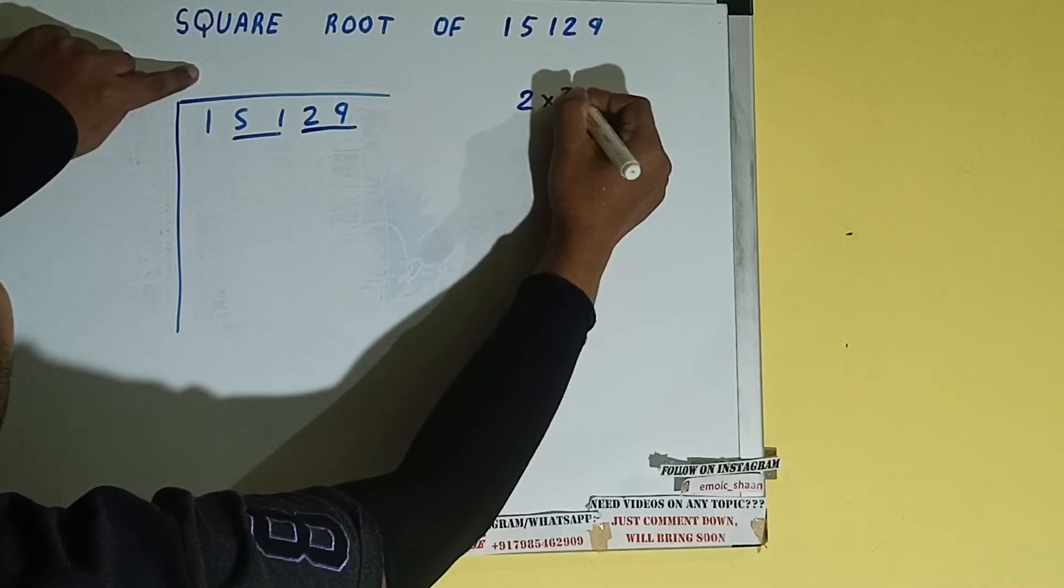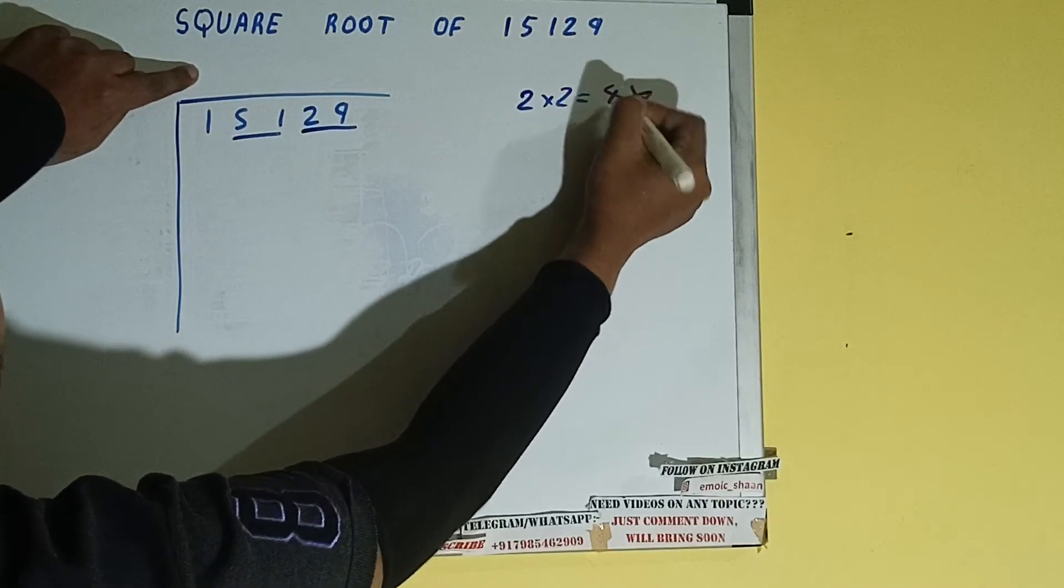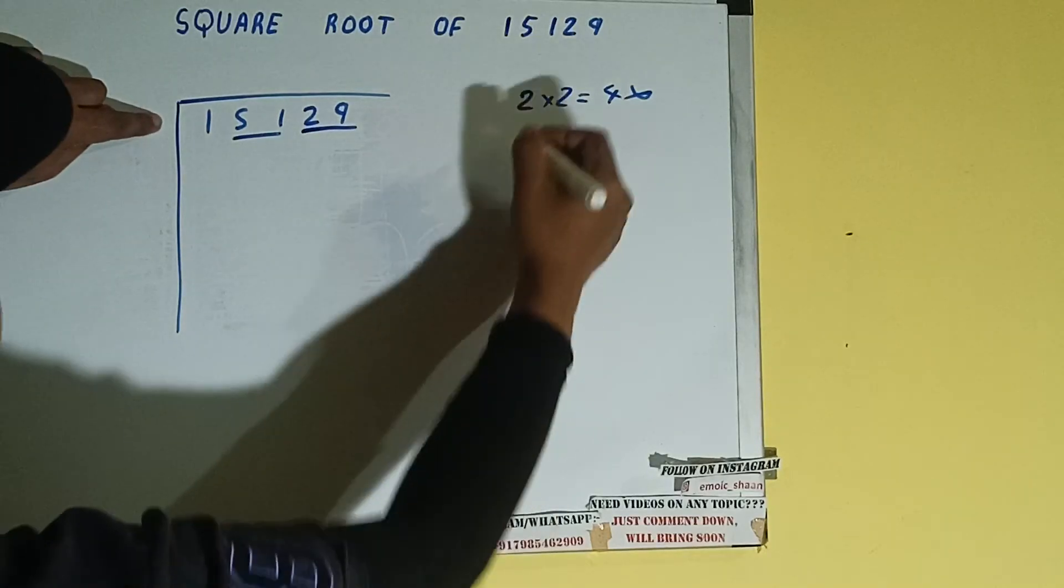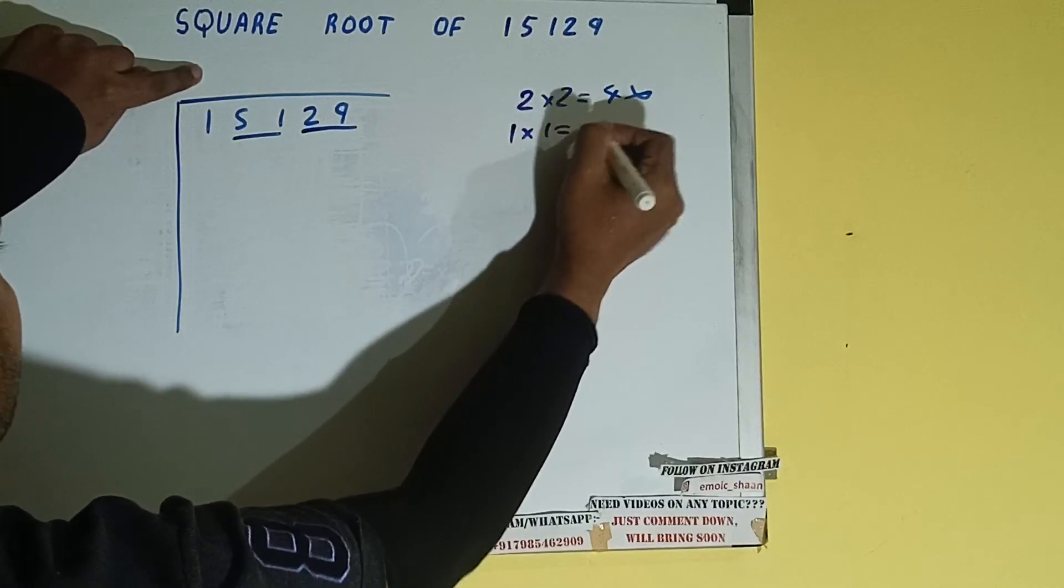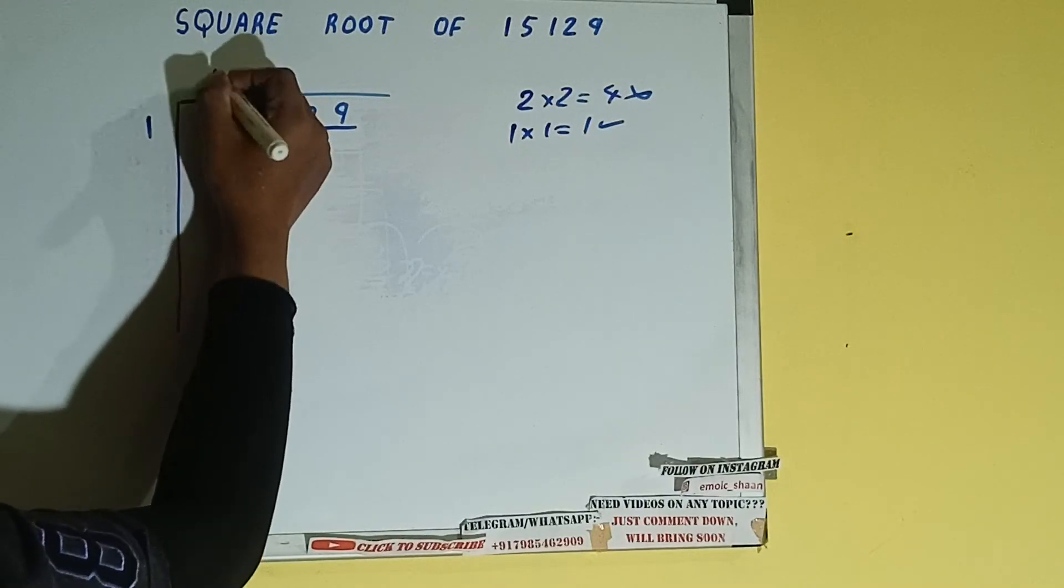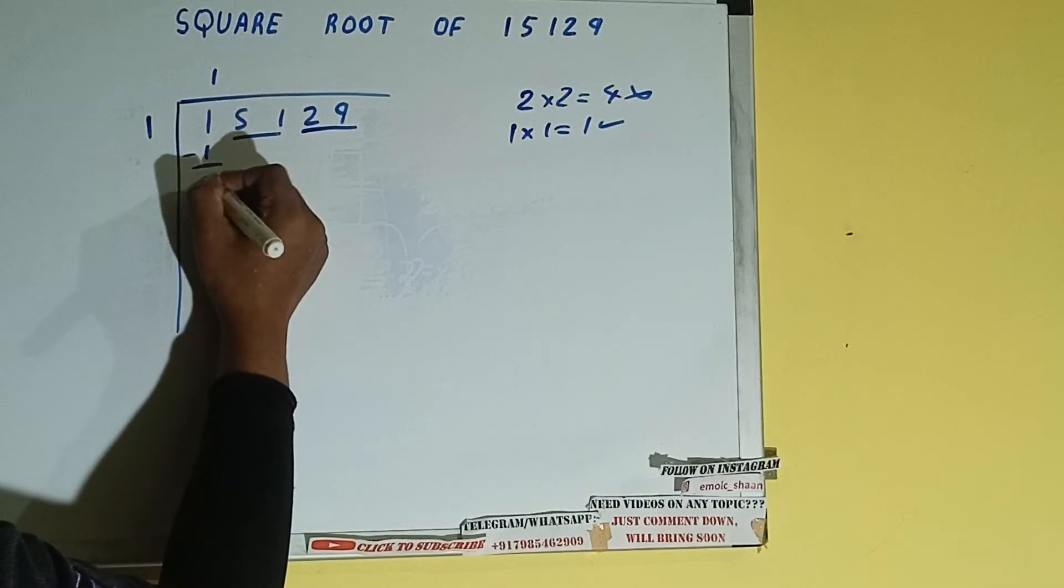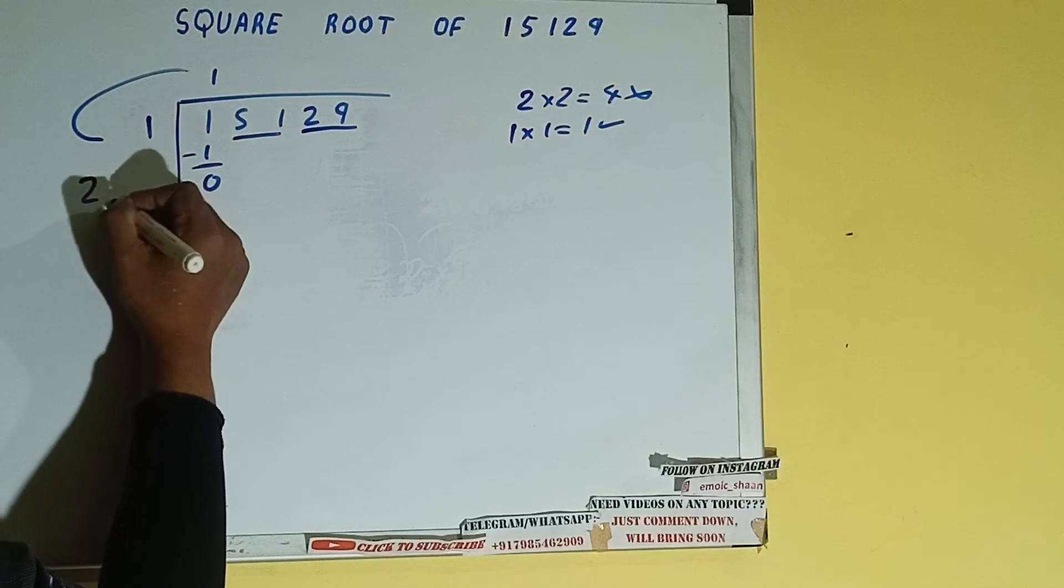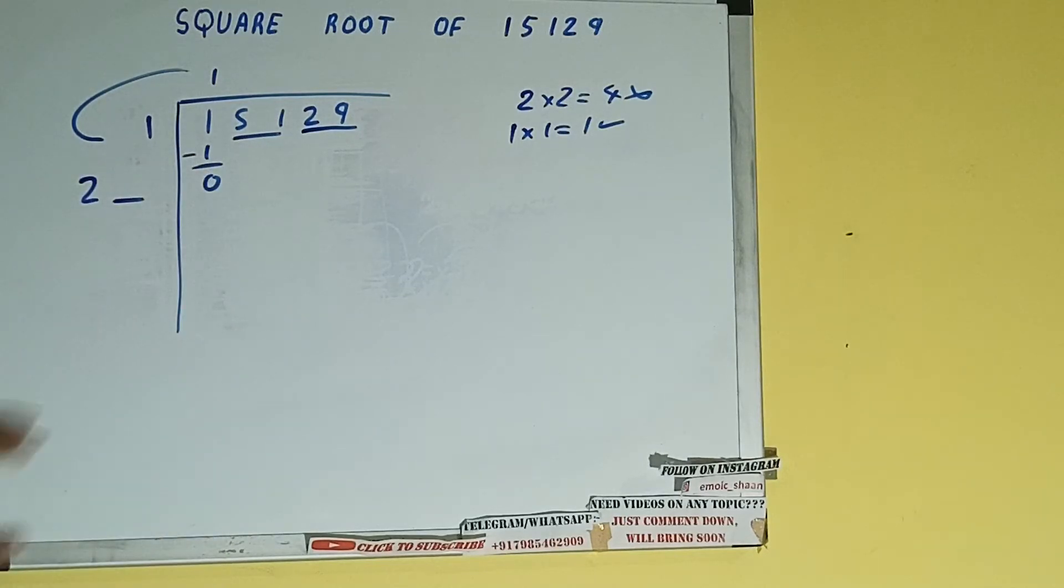If we write 1 here and 1 here it will be 1, which is good to take. So 1 here and 1 here. 1 subtract 0 will be left. We did 1 into 1, so add both. 1 plus 1 will be 2. Write it here and keep a digit extra, and this number we need to make it big. So bring the next pair down and it will be 51.